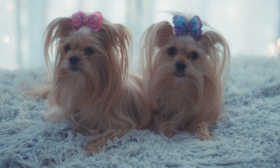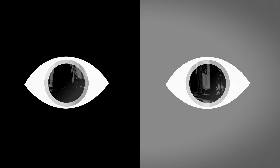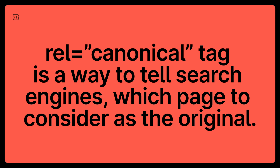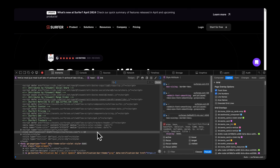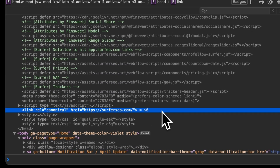The rel canonical tag can help you signal to search engines which page to consider as the original. Imagine you've got two pages on your site that are almost identical — to you it's clear they serve different purposes, but to search engines they look like duplicate content. Using the rel canonical tag is a way to tell search engines which page to consider as the original and to pay attention to.